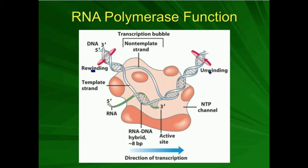First of all, it's a protein enzyme. RNA polymerase, at least in eukaryotic cells — and we're concerned mostly with humans, which are eukaryotic cells — exists in the nucleus. In humans, there are three types of RNA polymerases. In plants, there are five. We have RNA polymerases one, two, and three, and plants have an additional four and five.